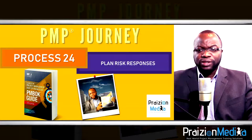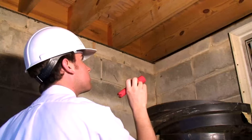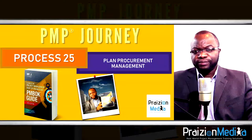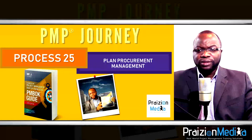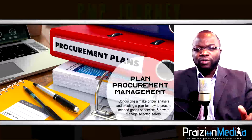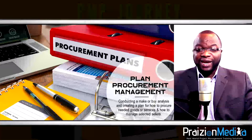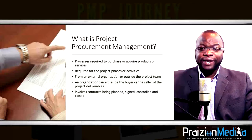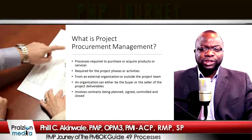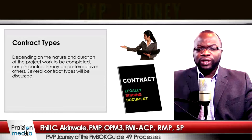Process 24: Plan risk responses. This is where the project manager and stakeholders plan responses to the identified risks. Process 25: Plan procurement management. Think about what you need to purchase — any services or goods from an external firm, supplies, or extra help — the contract types involved, and how to carry out the entire procurement or contracting process.